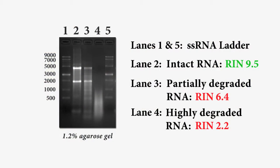The integrity and size distribution of your total RNA can be checked by running a denaturing agarose gel and staining with ethidium bromide.